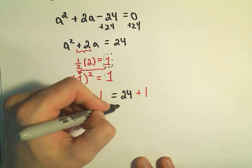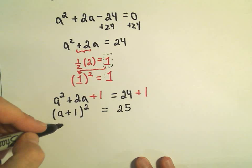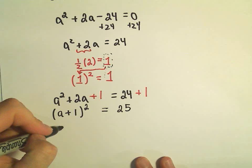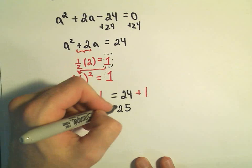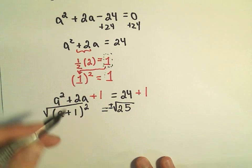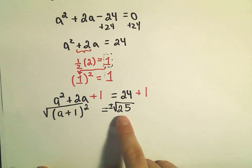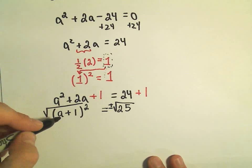Well, on the right side, 24 plus 1 is just 25. And now we're going to take the square root of both sides. And if I take the square root, I need to put a plus or minus on one side. Usually where the number is is where we'll stick it.